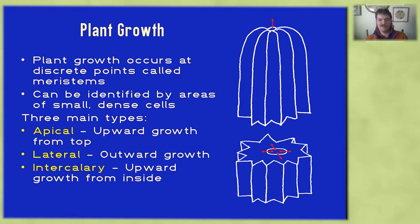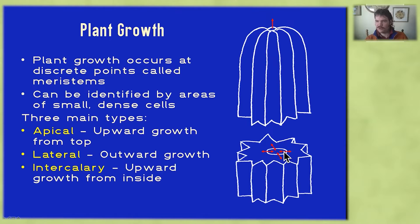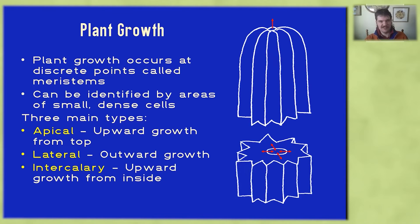There are three main types of meristems. First are apical meristems, which cause upward growth from the very top or apex of the plant body. Next, we have lateral meristems, which cause an increase in outward growth or girth of the plant body. And finally, we have intercalary meristems, which cause upward growth from the bottom of the structure — so they're kind of the opposite of an apical meristem.